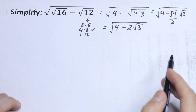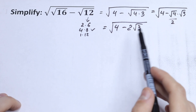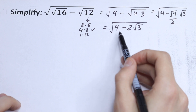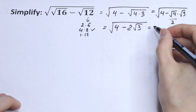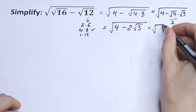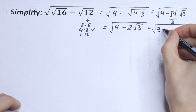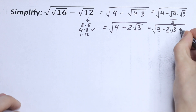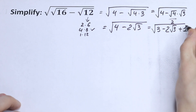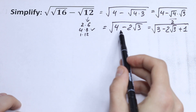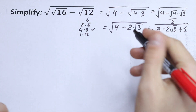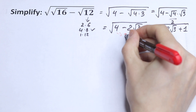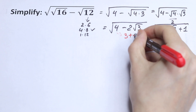What are we going to do next? I want to suggest a little trick here, because I want to write this 4 as 3 plus 1. So we will have the square root of 3 minus 2 times the square root of 3, plus 1. Of course nothing has changed — we just write this 4 as 3 plus 1.